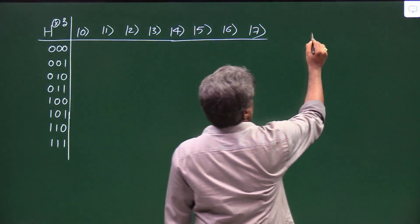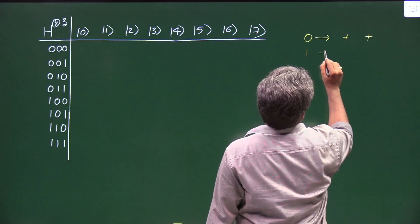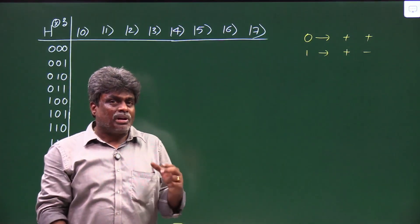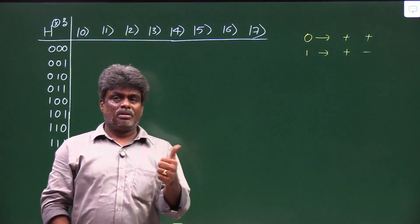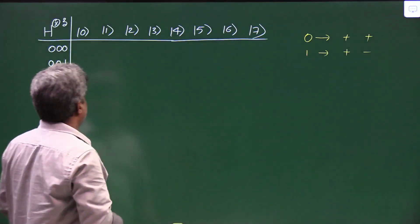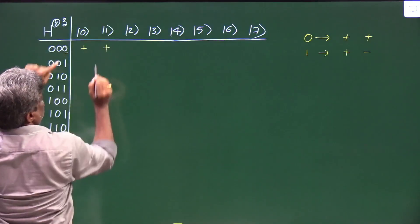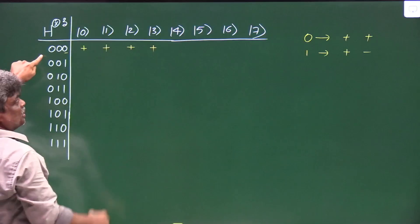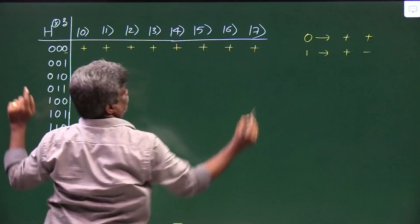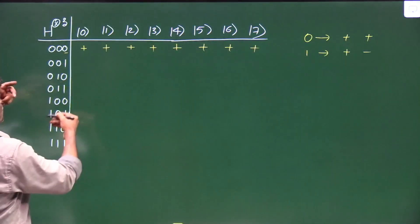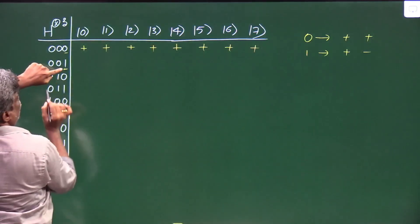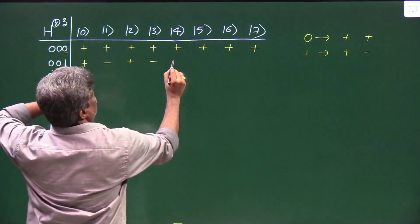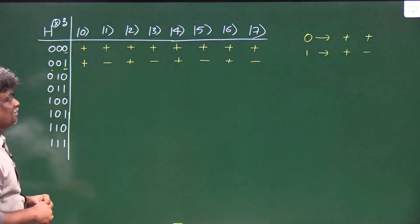Recall the rule: at the start, if the first bit is 0 write '+, +, +, +'; if it is 1 write '+, −, +, −' (extending the pattern). Then for each subsequent bit, if 0 repeat the entire previous sequence as-is; if 1 take the opposite of the entire sequence. For |000⟩: first bit 0 → '+,+'; second bit 0 → repeat '+,+,+,+'; third bit 0 → repeat: '+,+,+,+,+,+,+,+'. For |001⟩: first bit 0 → '+,+'; second bit 0 → '+,+,+,+'; third bit 1 → take opposite of last half... resulting in '+,+,+,+,−,−,−,−'. For |010⟩: first bit 0→'+,+'; second bit 1→ opposite giving '+,+,−,−'; third bit 0 → repeat: '+,+,−,−,+,+,−,−'.